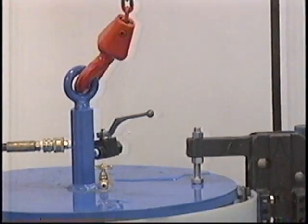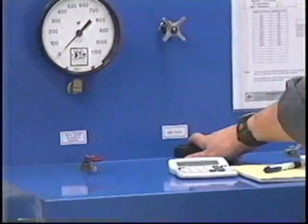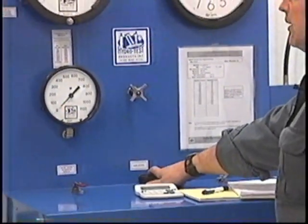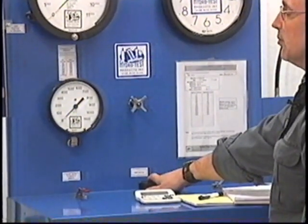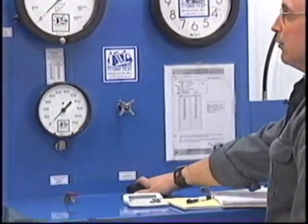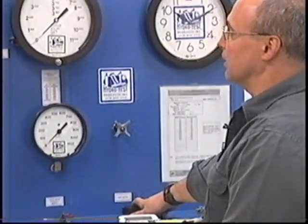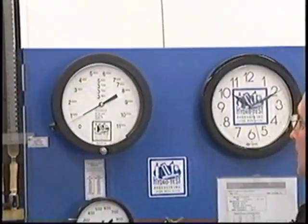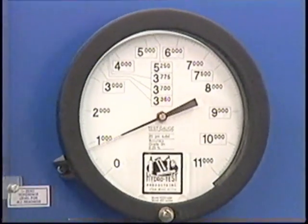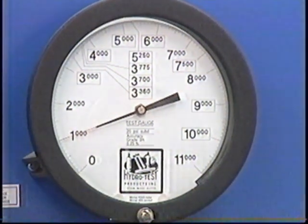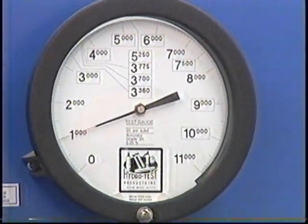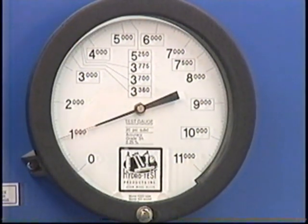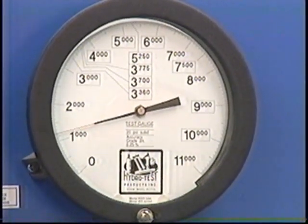We're now ready to operate the pump, and we are going to go up to 1,000 psi, and then we're going to continue up the scale in 1,000 psi increments, making sure at each increment that we do not have any drop in pressure or any water rise in the burette. Stop at 1,000 psi, verify that the pressure is holding, and continue up.